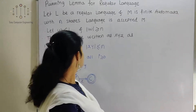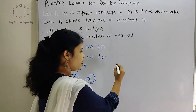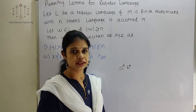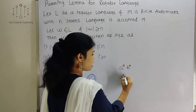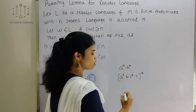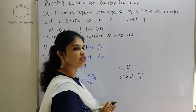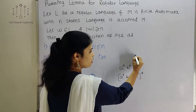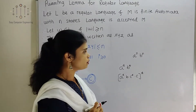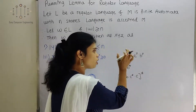Here are some conditions. First we will see which languages are regular and which are not regular. A*B* is a regular language because we can represent it with the help of finite automata. Similarly, expressions like A* + BC* or whole bracket star are also regular. But A^N B^N is not a regular language because we cannot represent it with finite automata.